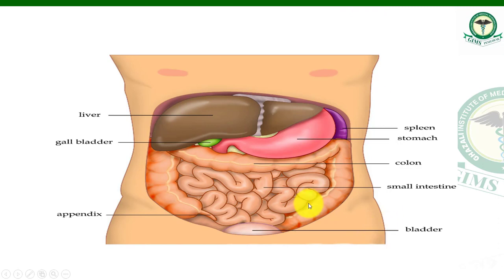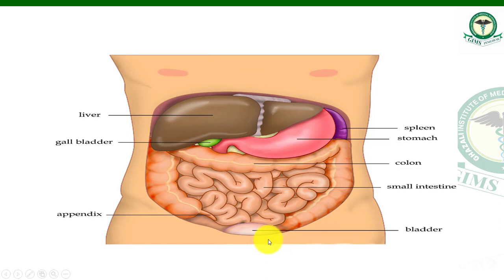Among these four cavities, which one is related to the abdominal cavity? Looking at the diagram, the arrow here shows the thoracic cavity above, and below is the pelvic cavity. The area in between — the middle portion — is basically the abdominal cavity.